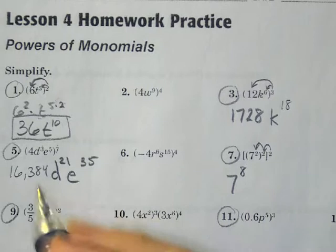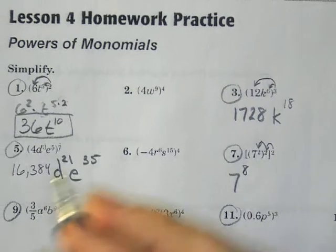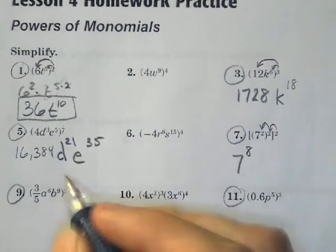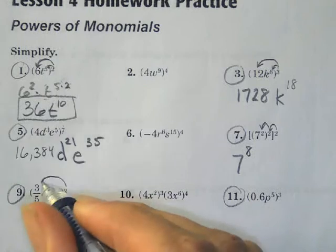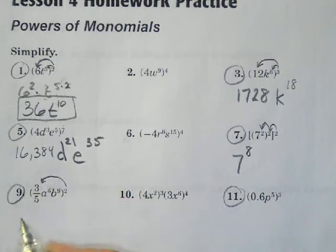Alright, let's look at number 9. Number 9, we're going to take this value, this fraction, and we're going to square the fraction. So we end up with 3 squared is 9, and 5 squared is 25.